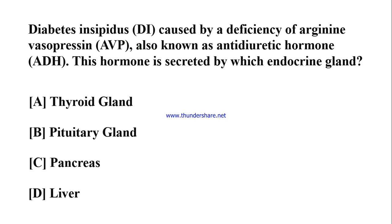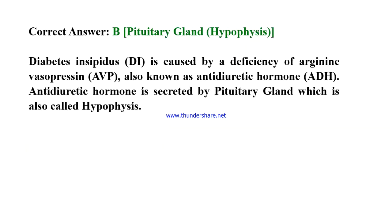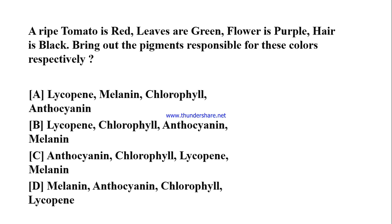Diabetes insipidus is caused by a deficiency of arginine vasopressin (AVP), also known as antidiuretic hormone (ADH). This hormone is secreted by which endocrine gland? A) Thyroid gland, B) Pituitary gland, C) Pancreas, D) Liver. Correct answer: B) Pituitary gland (hypophysis). Antidiuretic hormone is secreted by the pituitary gland, which is also called hypophysis.